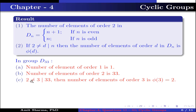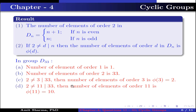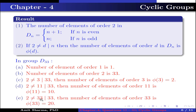3 (which is not equal to 2) divides 33, so the number of elements of order 3 is φ(3), which is equal to 2. 11 (which is not equal to 2) divides 33, so the number of elements of order 11 is φ(11), which is equal to 10. 33 (which is not equal to 2) divides 33, so the number of elements of order 33 is φ(33), which is equal to 20.